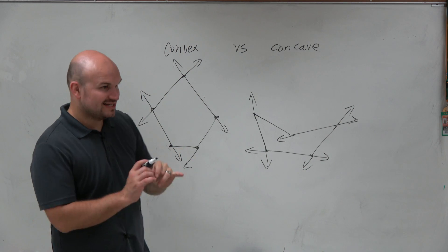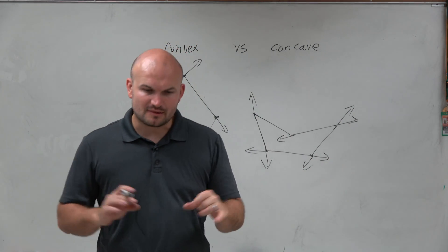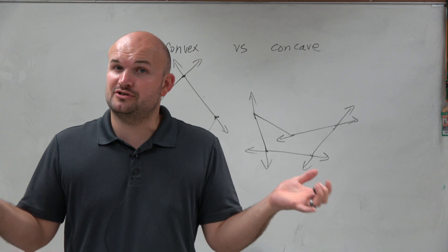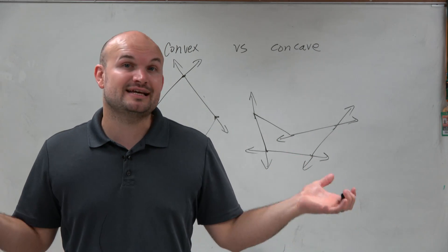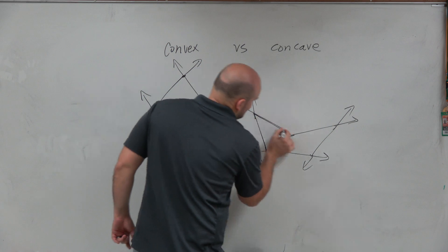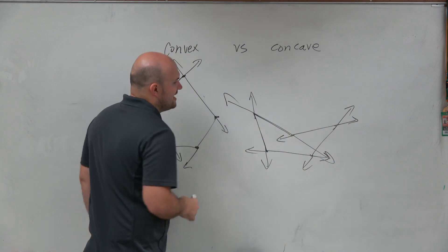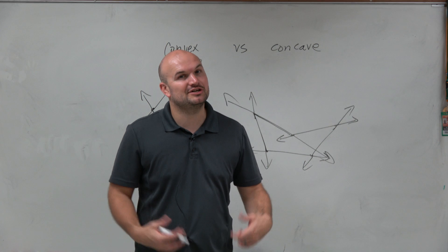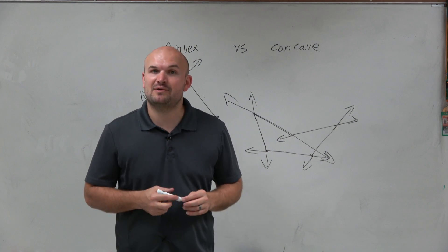So for convex, extend your exterior lines - as long as it doesn't enter the interior of the polygon, it's convex. However, when you extend the exterior lines of a concave polygon, you can see that it crosses the interior. That's how it's a concave polygon. Thanks.